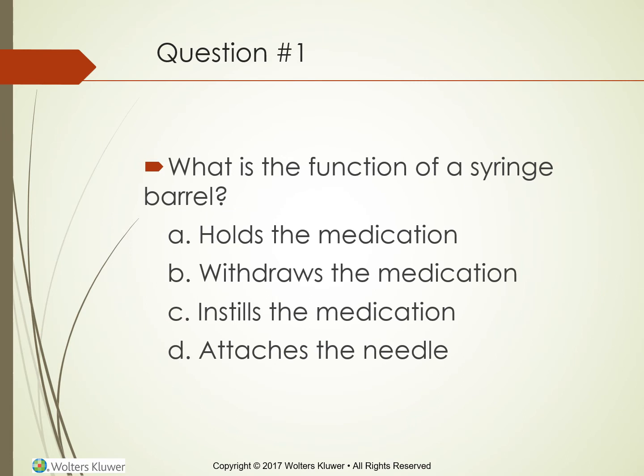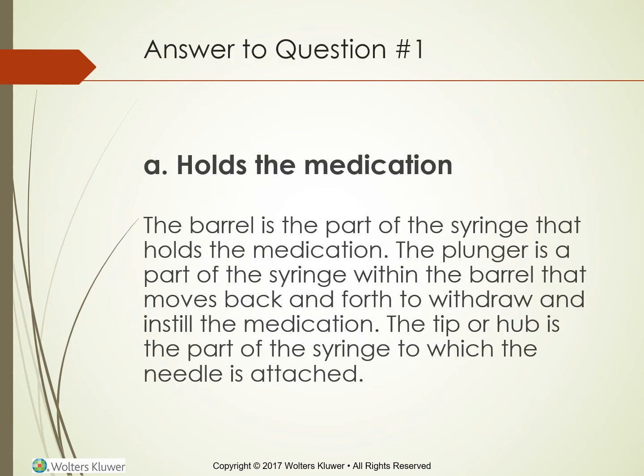What is the function of a syringe barrel — does it hold the medicine, withdraw the medicine, instill the medicine, or attach the needle? The answer is: it holds the medicine. The barrel is the part of the syringe that holds the medicine. The plunger moves back and forth within the barrel to withdraw and instill the medicine. The tip or hub is the part to which the needle is attached.